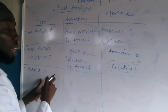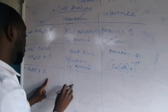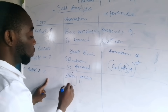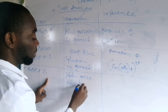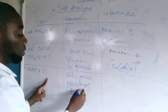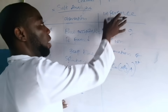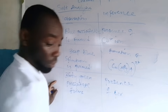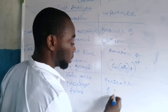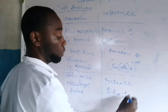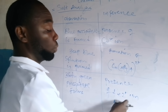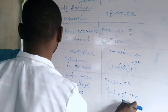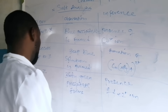So when we added sodium hydroxide plus Z, which is ferrous sulfate, what is formed is a dirty green precipitate. Under the inference: presence of Fe²⁺ ion, also called ferrous ion or iron two ion.